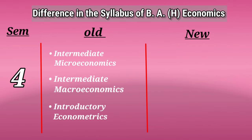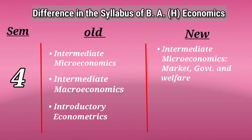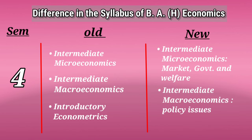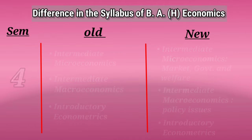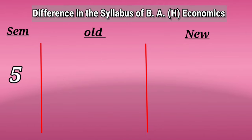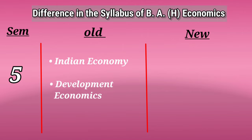In Semester 4, earlier it was Intermediate Microeconomics, Intermediate Macroeconomics, and Introductory Econometrics. Now the subjects will be Intermediate Microeconomics, which will include Market, Government and Welfare; Intermediate Macroeconomics, which will include Policy Issues; and Introductory Econometrics.